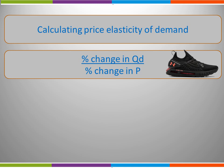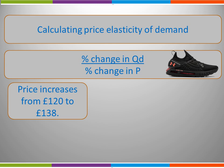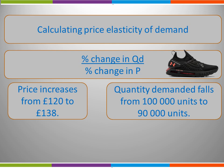Let's have a look at a numerical example. Here we have a relatively high-end trainer. It is likely to be bought by a sports enthusiast and probably has some degree of brand loyalty. The price is going to increase from £120 to £138. As a consequence of this, the quantity demanded will fall from 100,000 units to 90,000 units. So, what is the price elasticity of demand?